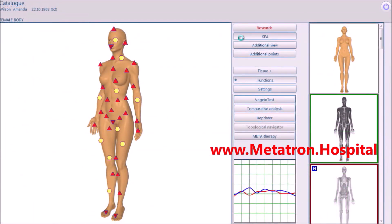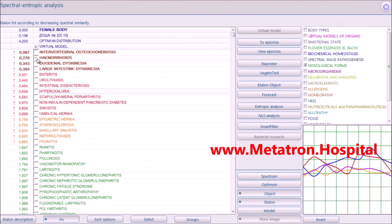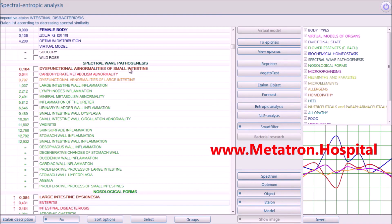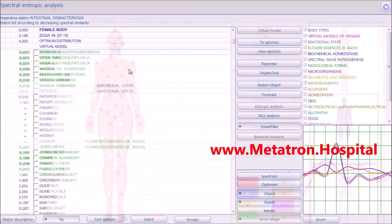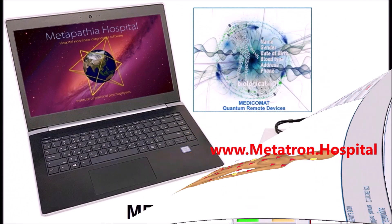Metatron Remote can be applied at any distance using the client information, which is used as a medium for quantum link between the Metatron device and the client. This was referred to as instantaneous action at a distance by Einstein. Modern physicists named it quantum entanglement.